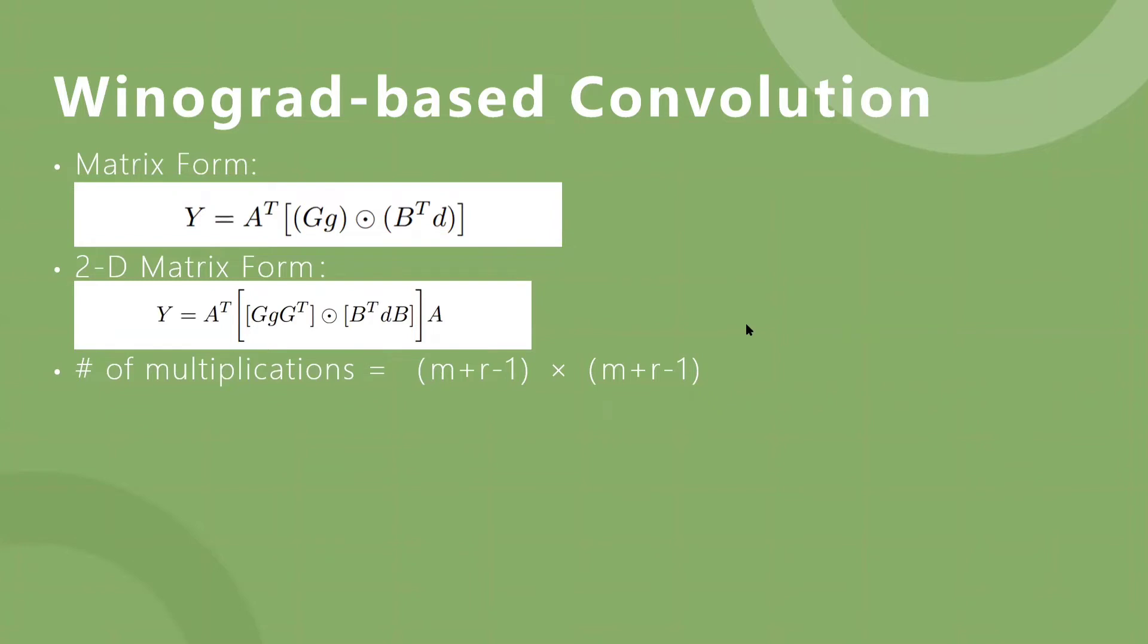The convolution is then computed for each tile and filter combination in each channel and the results are summed over all channels. The number of multiplications becomes M plus R minus 1 times M plus R minus 1, greatly reduced compared to direct convolution and image-to-column-based convolution.